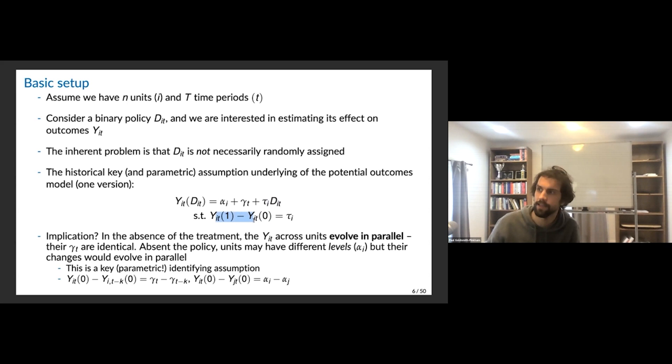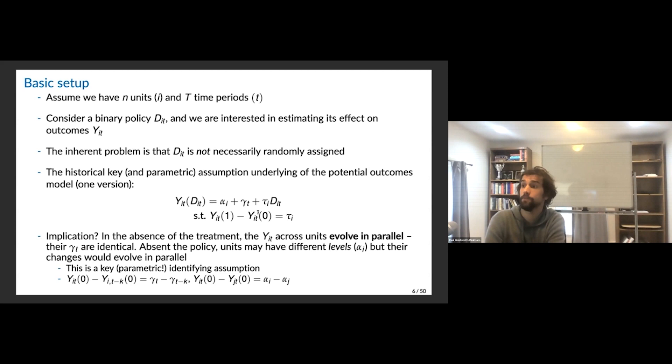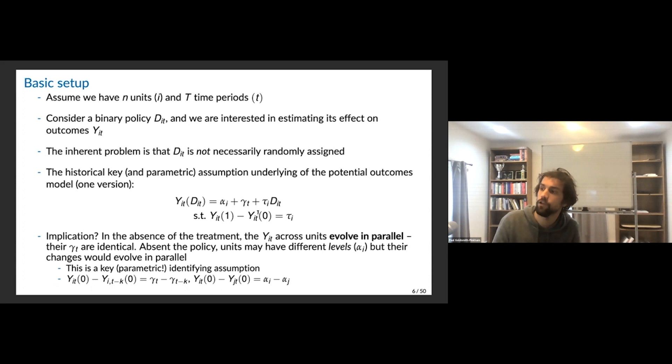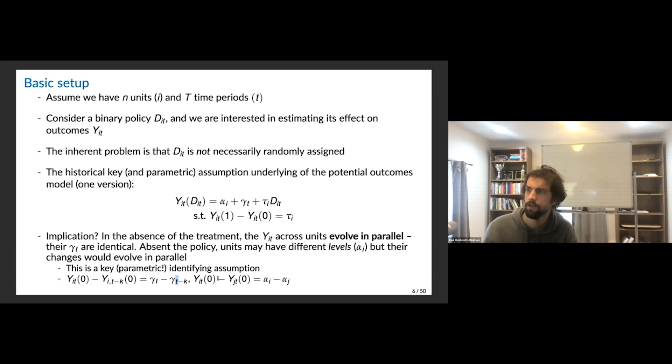The implication here is that in the absence of treatment, units across i evolve in parallel — their gamma_t's are identical. So absent the policy, units might have different level effects, but the changes would evolve in parallel. For the untreated group, you get gamma_t minus gamma_{t-k} within person; if they're untreated and across people, you get the difference in level effects.